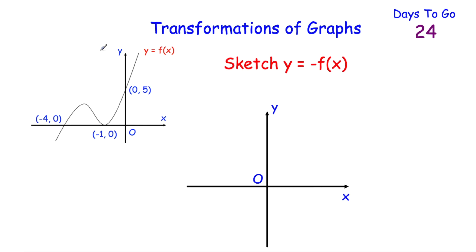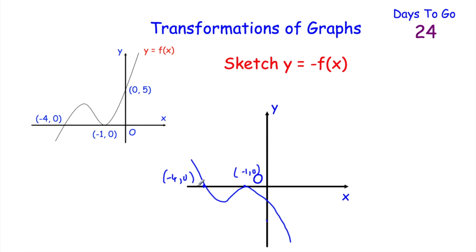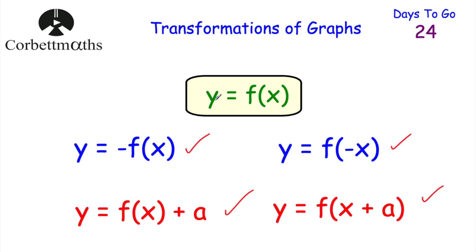Finally, sketch y equals minus f of x using the same graph. This is a reflection in the x-axis. Points above the x-axis go below, points below go above, and points on the x-axis stay where they are. So negative 4, 0 and negative 1, 0 stay fixed. The point 0, 5 moves to 0, negative 5. The graph is reflected downward through those x-intercepts.